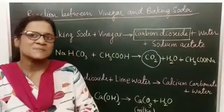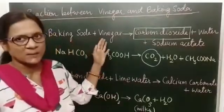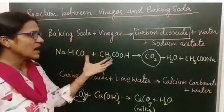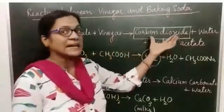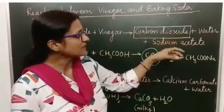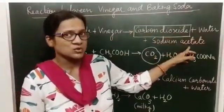In the gas passing tube, we took vinegar and baking soda. When vinegar and baking soda react, they form carbon dioxide, along with water and sodium acetate.